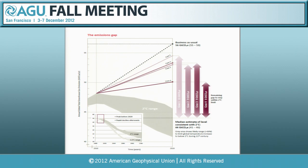If the most we could potentially hope for is a global peak in 2025, what it would mean is that to reach a 2-degree world, we'd have to have negative emissions by 2040. I just do not buy that scenario at all. So I'm very, very pessimistic about a 2-degree world.